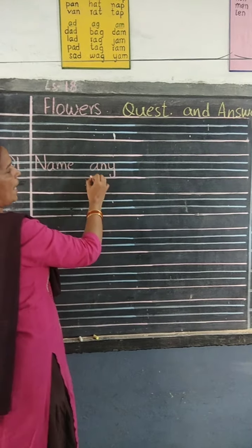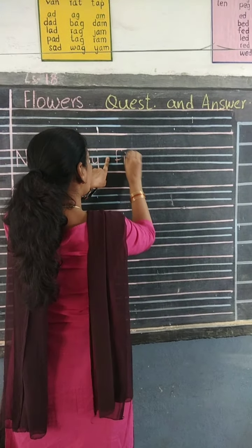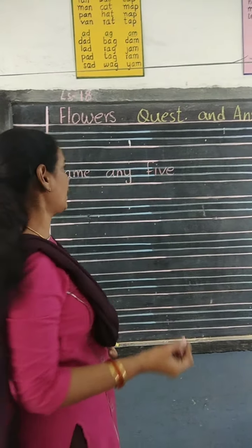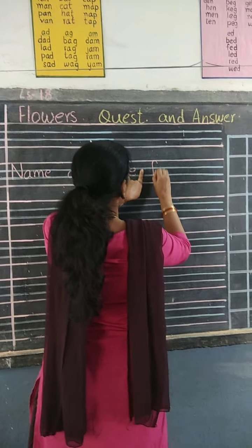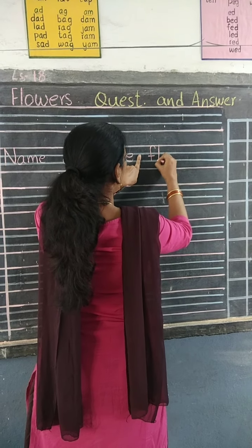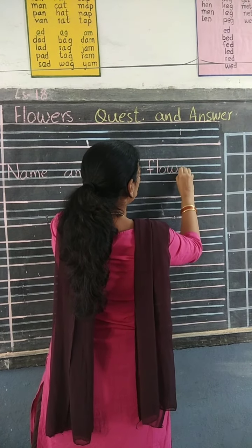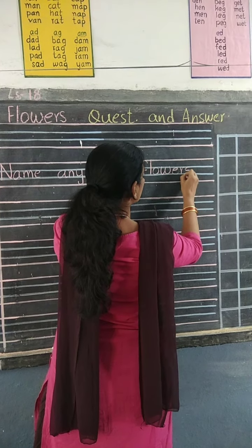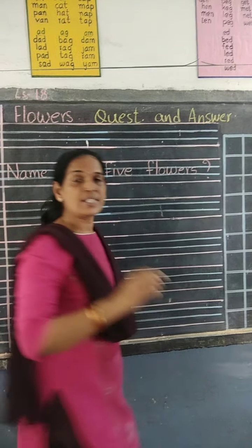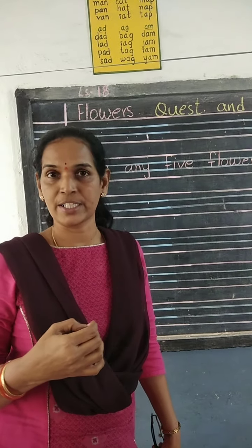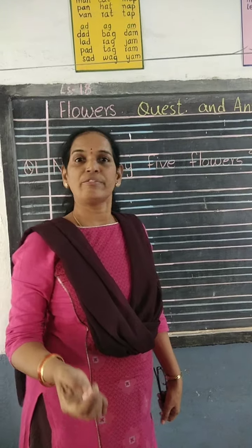Finger space. Write 'any.' Finger space. Five — spelling F-I-V-E. Five. What flowers? Write the name of only five flowers, any flowers. We can write today. After 'five,' finger space, 'flowers' — F-L-O-W-E-R-S. Flowers. When you are writing, loudly read the spelling and write neatly.